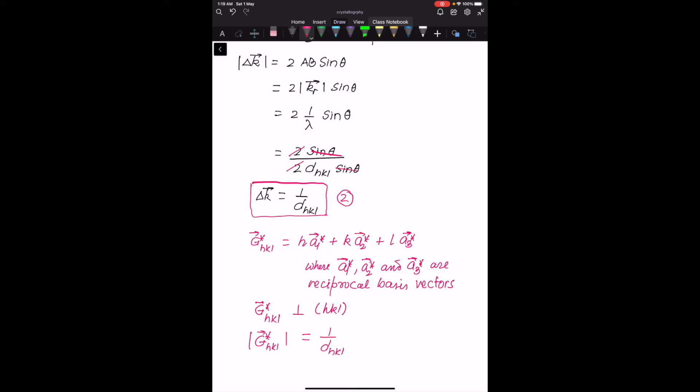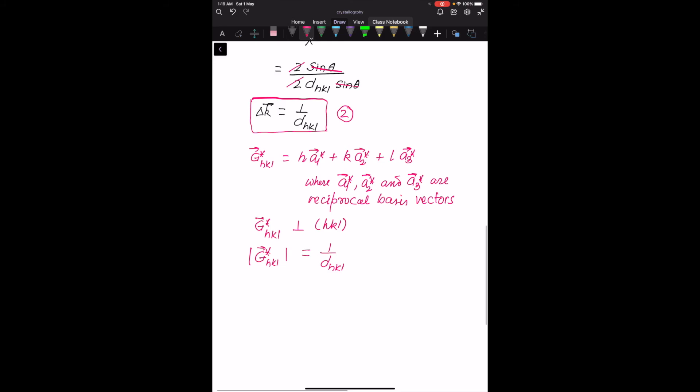Comparing these properties with the properties of delta K, we see that delta K is nothing but G star HKL. And this is the vector form of Bragg's law in the reciprocal space.